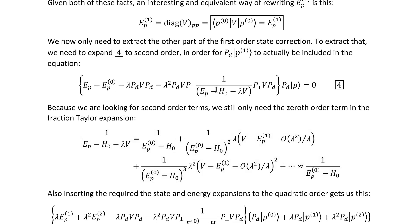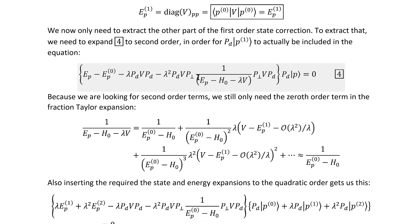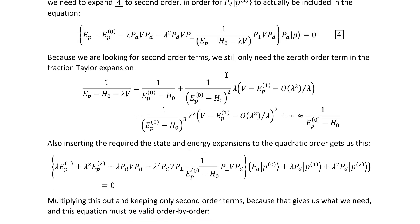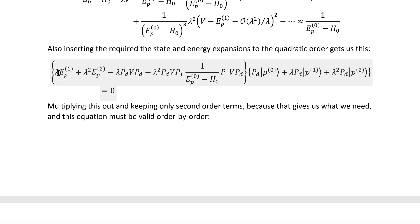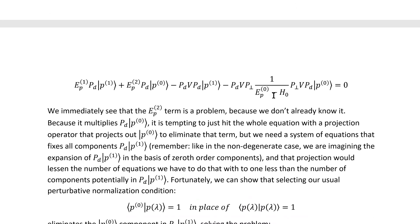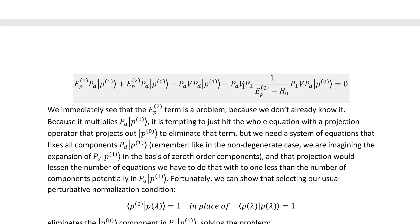Again, we pull out our trusty Taylor expansion of this fractional quantity, and we see that we can actually save this term, but only with the zeroth order term of the Taylor expansion of the fraction. Otherwise, it gets to too high order. We can then also insert the energy and state expansions to quadratic order and multiply it out, keeping only second order terms because that gives us what we need, and the equation is valid order by order. So basically, we're justified in ignoring the linear and any zeroth order terms that show up even though they're technically bigger than the quadratic order ones. That gets us to here. We immediately see that there's a second order energy correction term. That's a problem because we don't already know it, but because it multiplies this quantity, it's tempting to just hit the whole equation with a projection operator that projects out this specific state to eliminate that term conveniently.